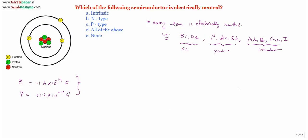Now consider the intrinsic semiconductor case. An intrinsic semiconductor is also called a pure semiconductor. Pure means it consists of atoms of all identical nature. For example, a silicon crystal or germanium crystal is an intrinsic semiconductor. A crystal has a unique structure that repeats regularly. A silicon crystal consists only of silicon atoms, and every silicon atom is electrically neutral, so the total charge is neutral. Therefore, intrinsic semiconductor is electrically neutral.